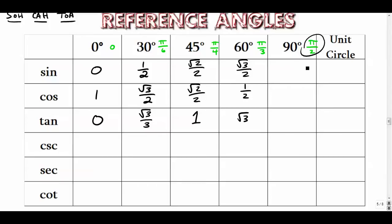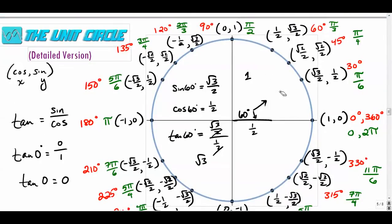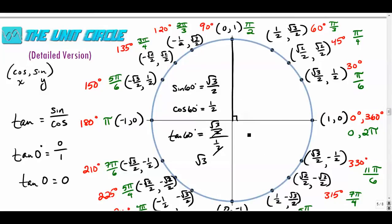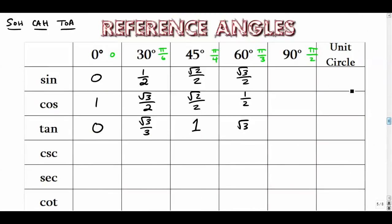At 90 degrees, you can't form a right triangle in the usual sense. Instead, just rely on the definitions directly: sine is the y-value, so the sine of 90° is 1. Cosine is the x-value, so cosine of 90° is 0. For tangent, it's sine divided by cosine — you can't divide by zero — so the tangent of 90° is undefined.